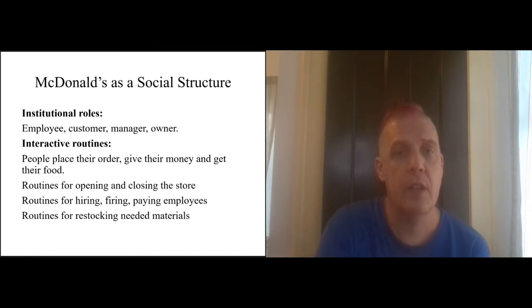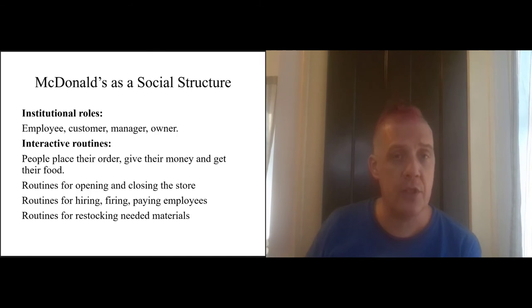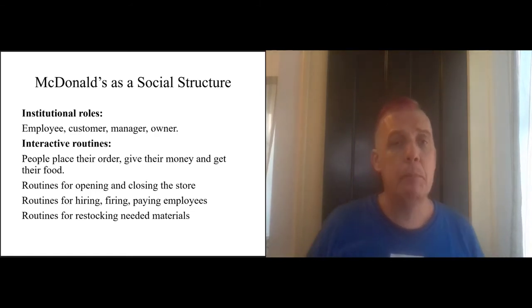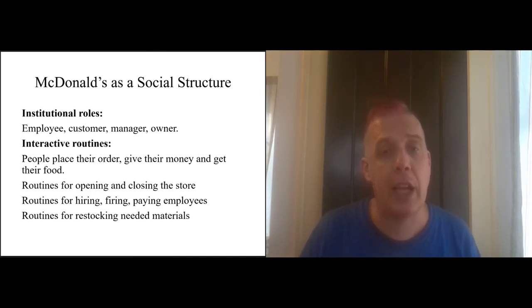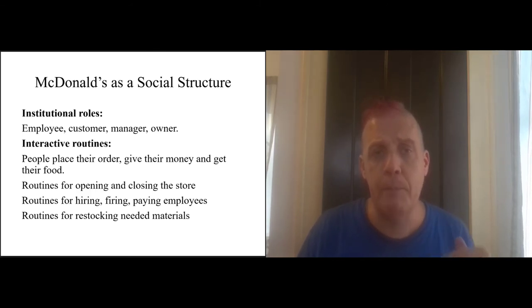Institutional roles: if there's a McDonald's, there are certain roles — employee, customer, manager, owner. The customer counts as part of the social structure; the structure wouldn't exist without customers. People in these roles engage in routines — certain habits when you go to McDonald's. People place their order, give their money, get their food. There are routines for opening and closing the store, for hiring, firing, and paying employees, and for restocking needed materials. So a McDonald's has roles, people in roles, and routines those people are supposed to perform.